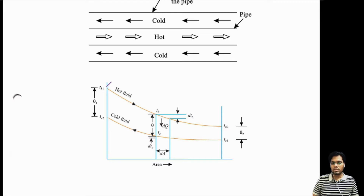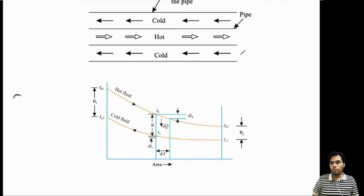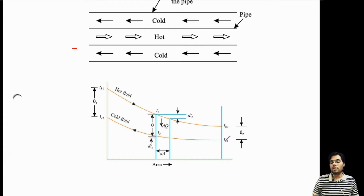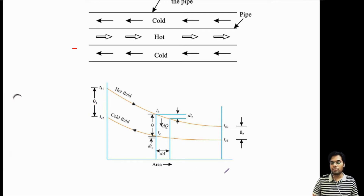The temperature of the hot fluid is going to decrease as we move from the inlet point to the outlet point. The inlet temperature of hot fluid is TH1 and the outlet temperature is TH2, so the temperature continuously decreases from TH1 to TH2. For the cold fluid, TC1 to TC2, the temperature continuously increases as it gains heat from the hot fluid, so TC1 is less than TC2. The temperature difference at the inlet of hot fluid and outlet of cold fluid is written as theta1, which is TH1 minus TC2. At the outlet of hot fluid and inlet of cold fluid, the temperature difference is TH2 minus TC1, denoted by theta2.